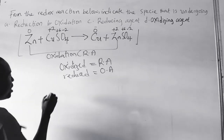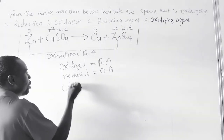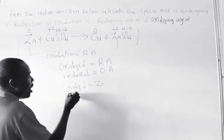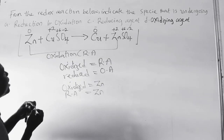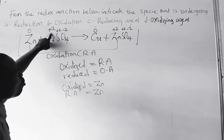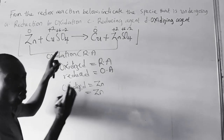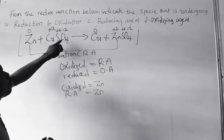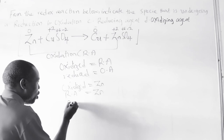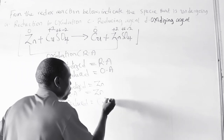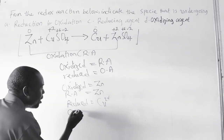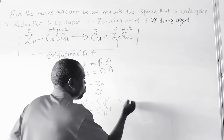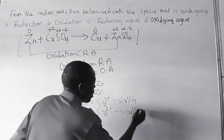In the case of copper, from copper 2 to 0 — that is a reduction in oxidation number, so it means copper 2 from copper sulfate is reduced. The oxidizing agent here is also copper 2, which comes from copper 2 sulfate.